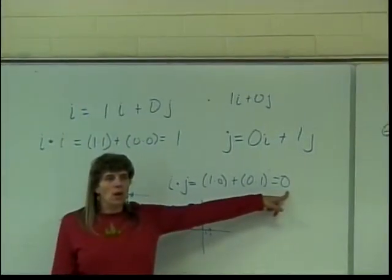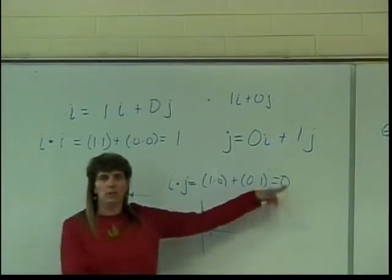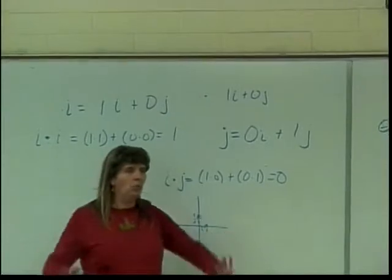Figuring out if vectors are orthogonal is not difficult at all. You take their dot product, if it equals zero, then they're orthogonal.